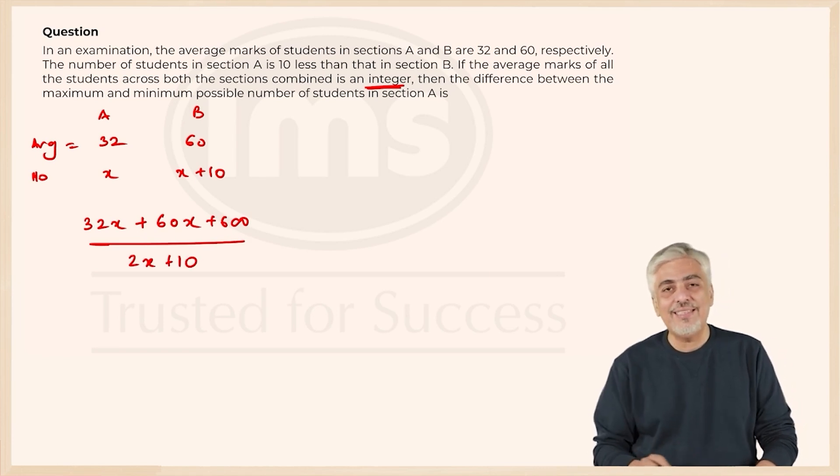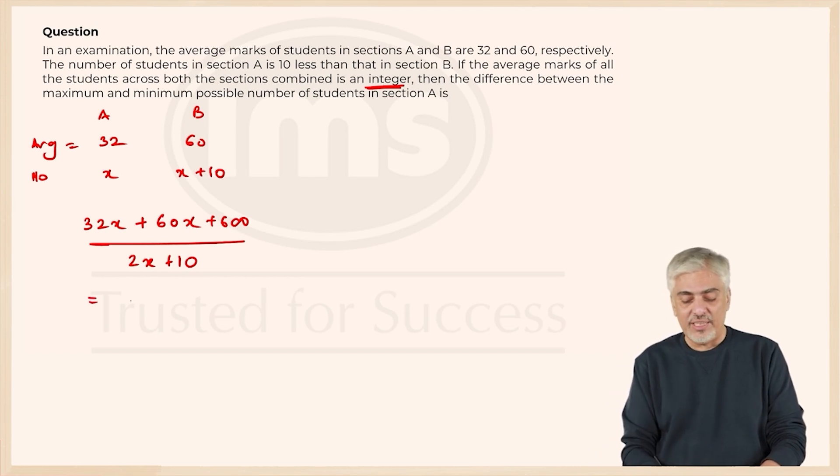This is where I started thinking that the question was going to get slightly difficult. 92x plus 600 upon 2x plus 10 is my average.